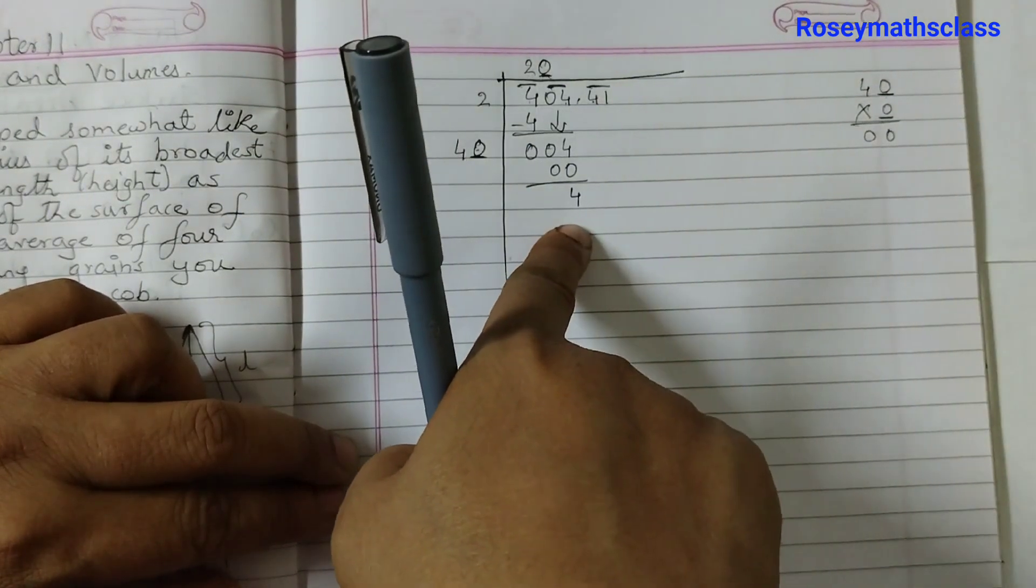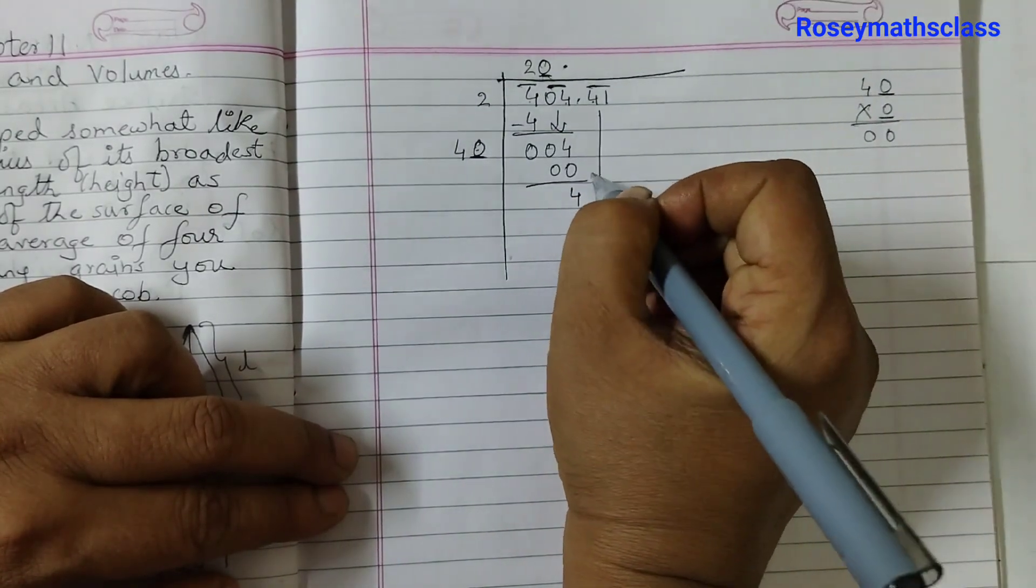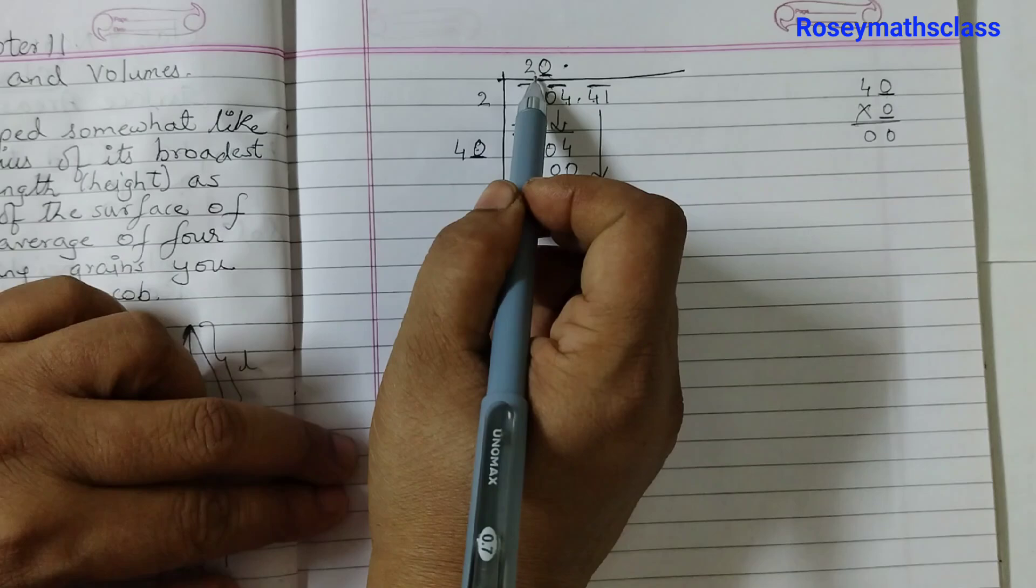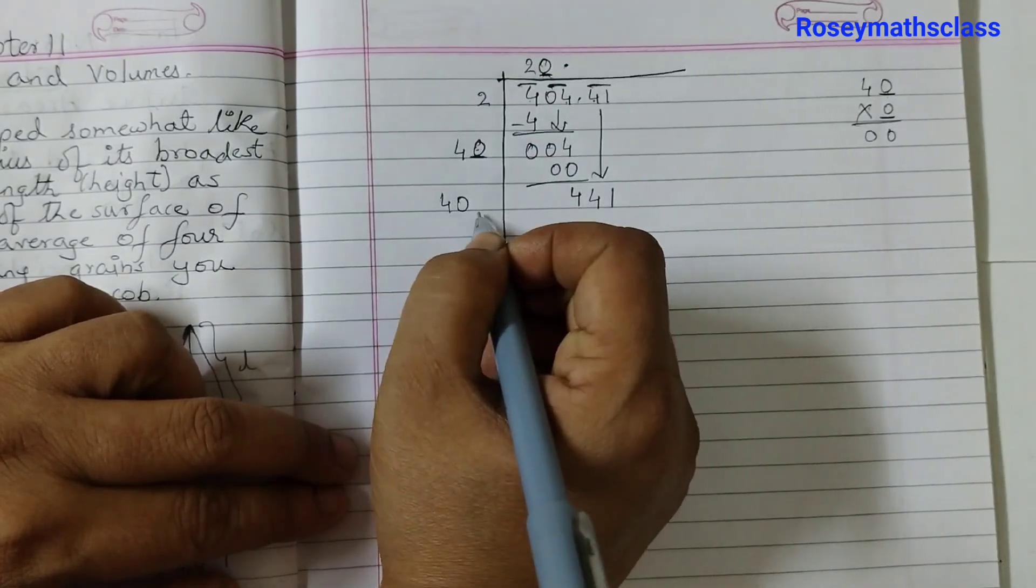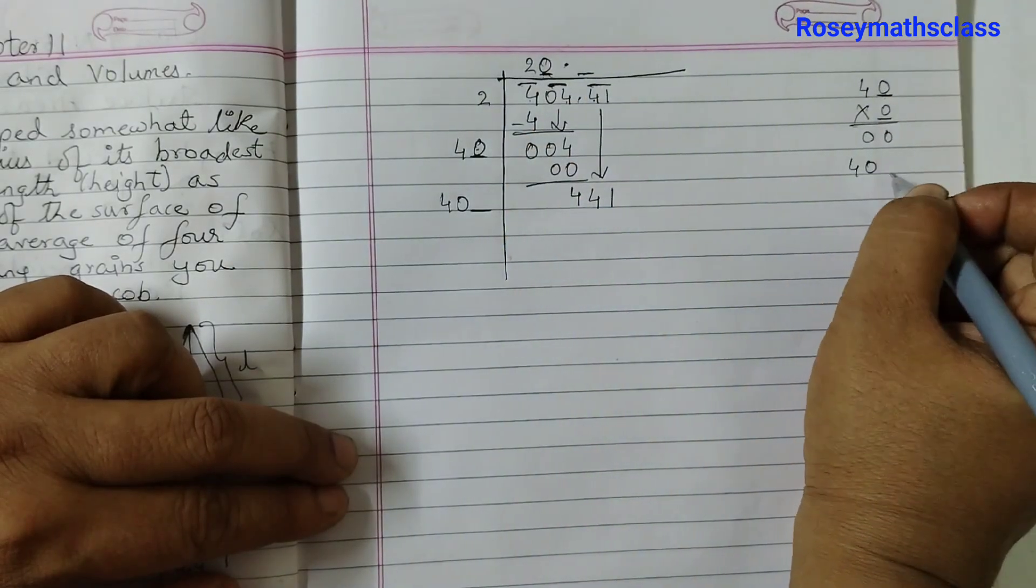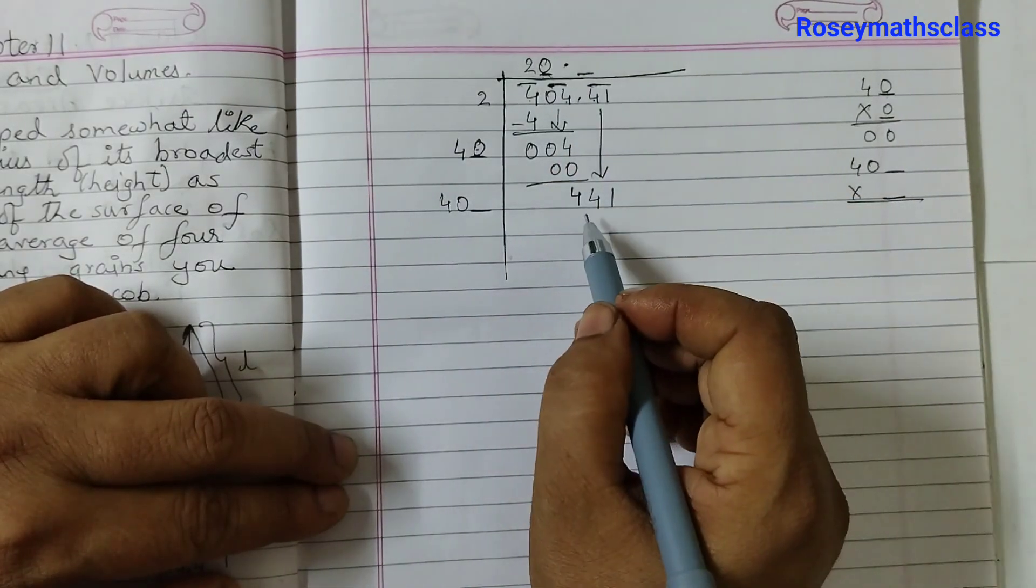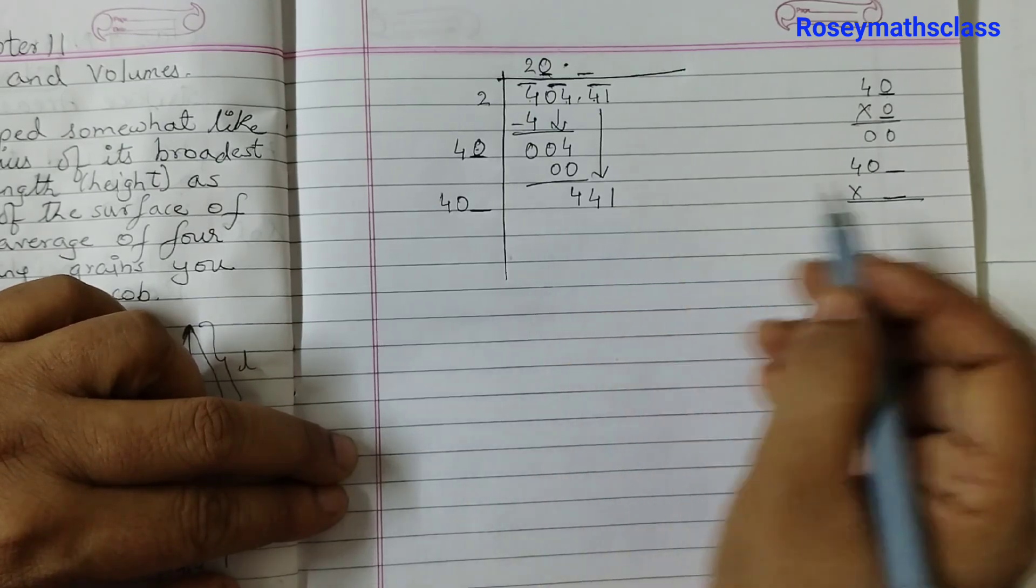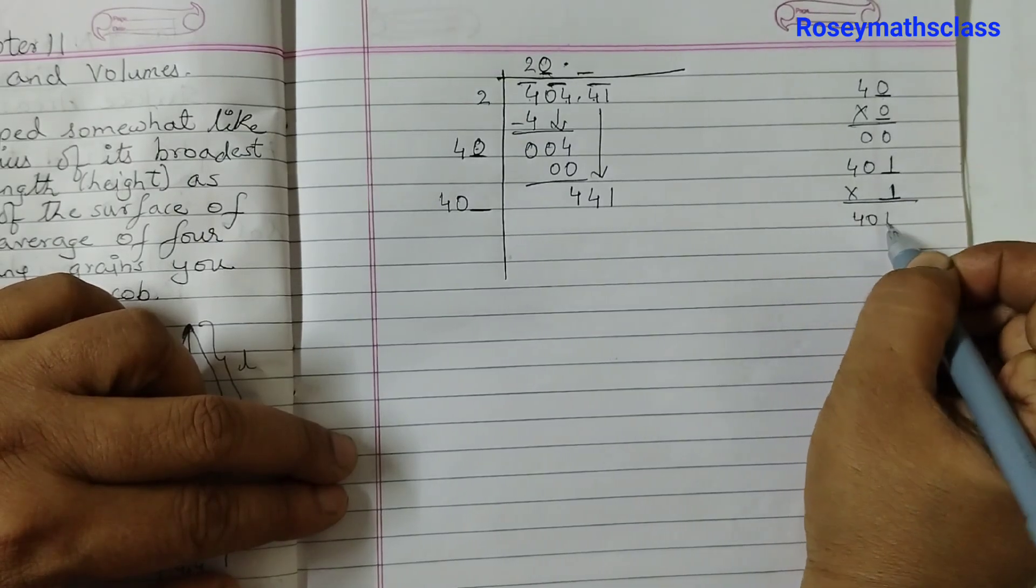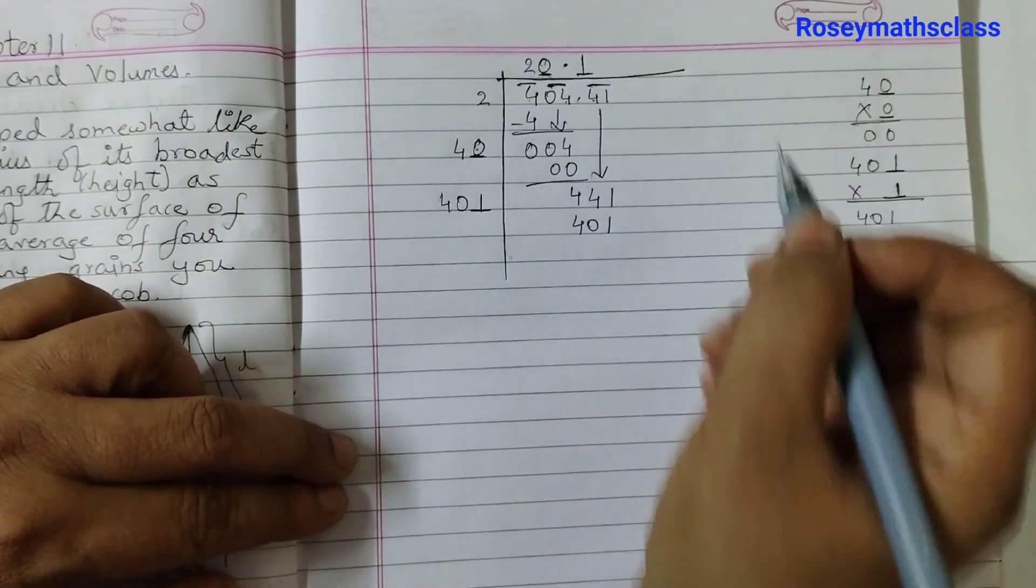Now the new remainder is 4. Then we have a decimal point. So place a decimal point here and bring down the next pair which is 41. Double the quotient 20, 20 becomes 40 and with the blank on the right. Same rule goes, you need to think of a number such that when you multiply it with the new quotient, it must be less than 441. So I can think of 1. 401 into 1 is 401 so that is smaller than this.